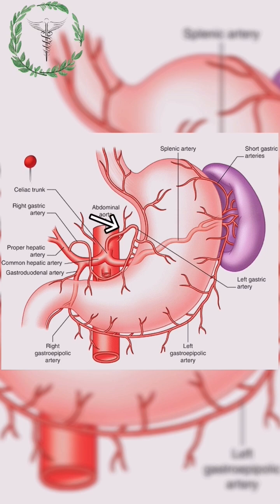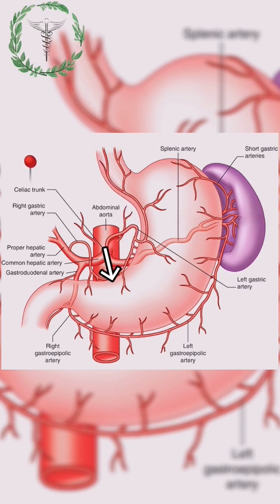It has got the left gastric artery, which supplies the lower one-third of the esophagus, as well as the upper part of the lesser curvature.